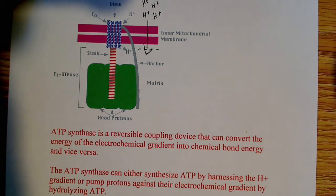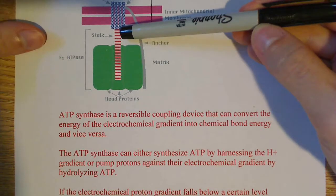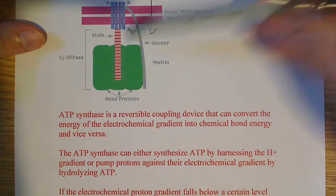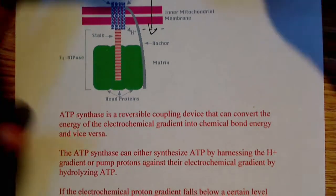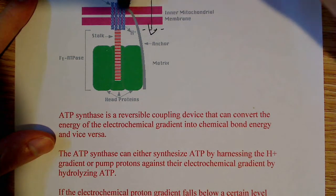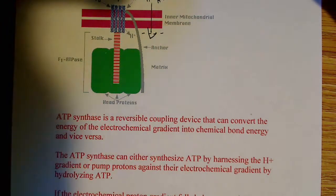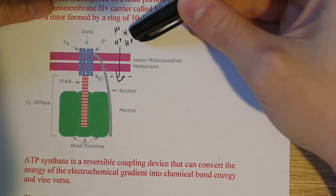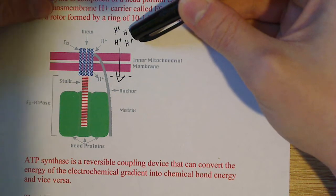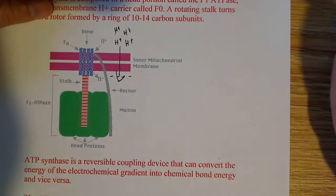We also have what's known as a rotating stalk, and it turns with a rotor formed by a ring of 10 to 14 carbon subunits. This stalk turns using the energy from protons flowing by their electrochemical gradient back into the matrix. The inner membrane space has a high concentration of protons — it's small, so there's a lot of protons — and by diffusion, they want to flow back into the matrix.